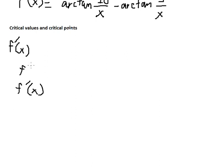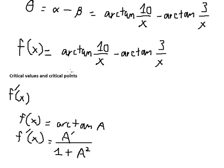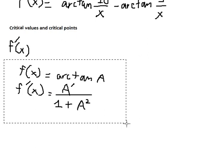The formula we need: the derivative of arctan(u) equals 1 over (1 + u²). We apply this formula to each term — arctan(10/s) and arctan(3/s) — so we have the derivative expression like this.